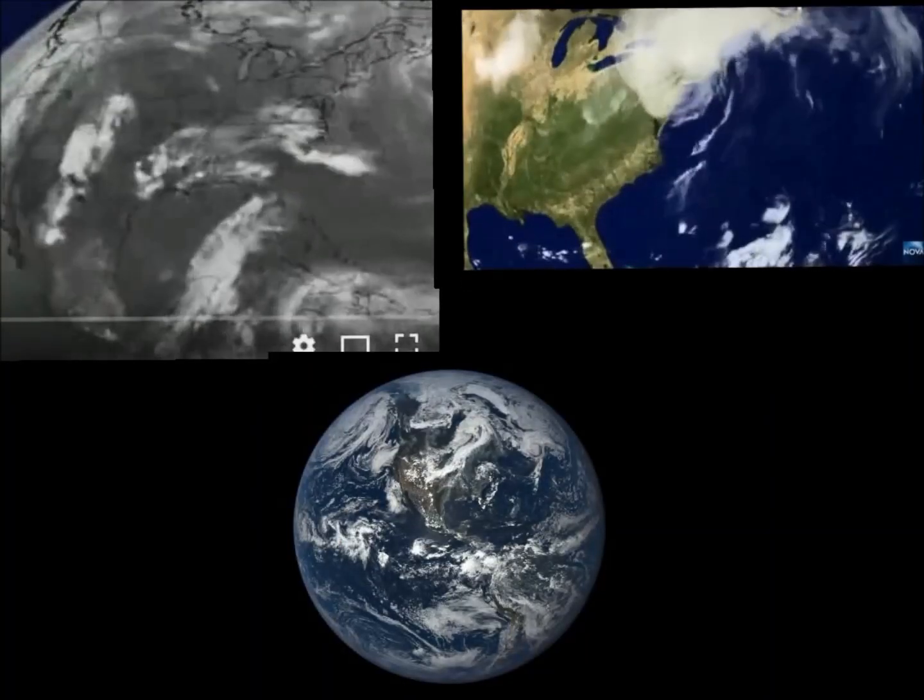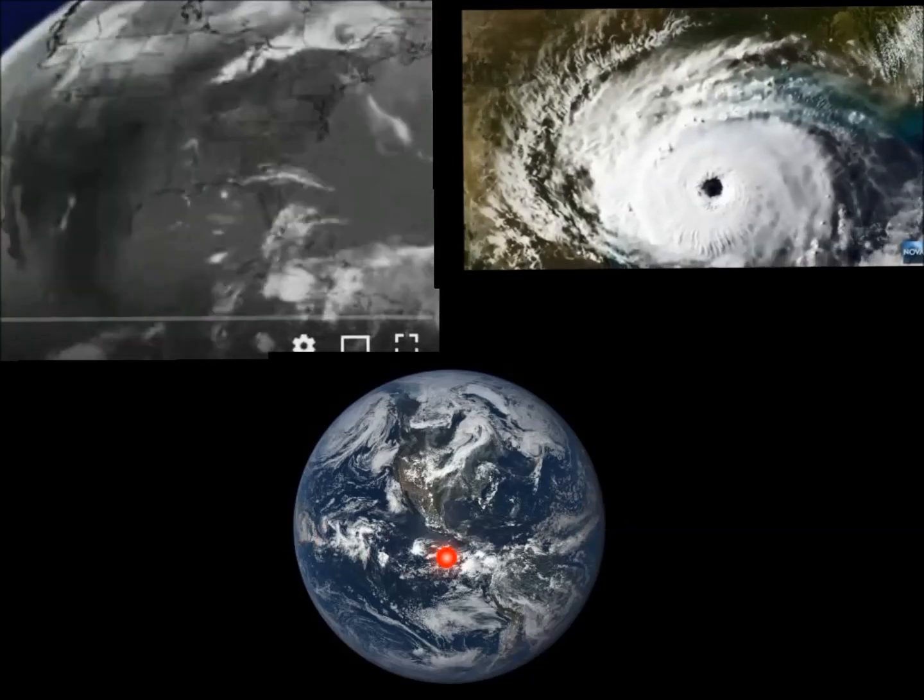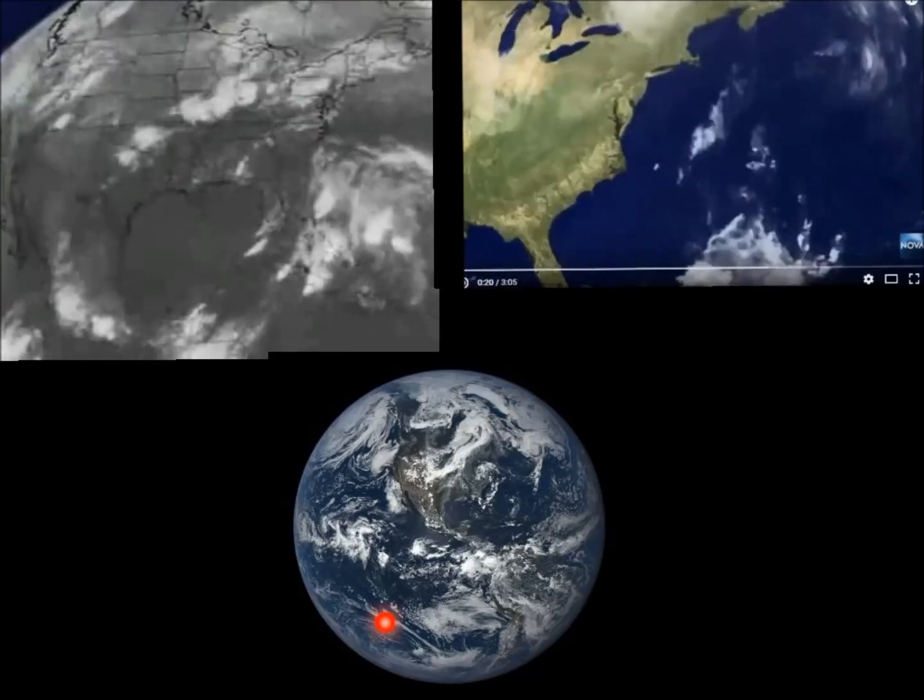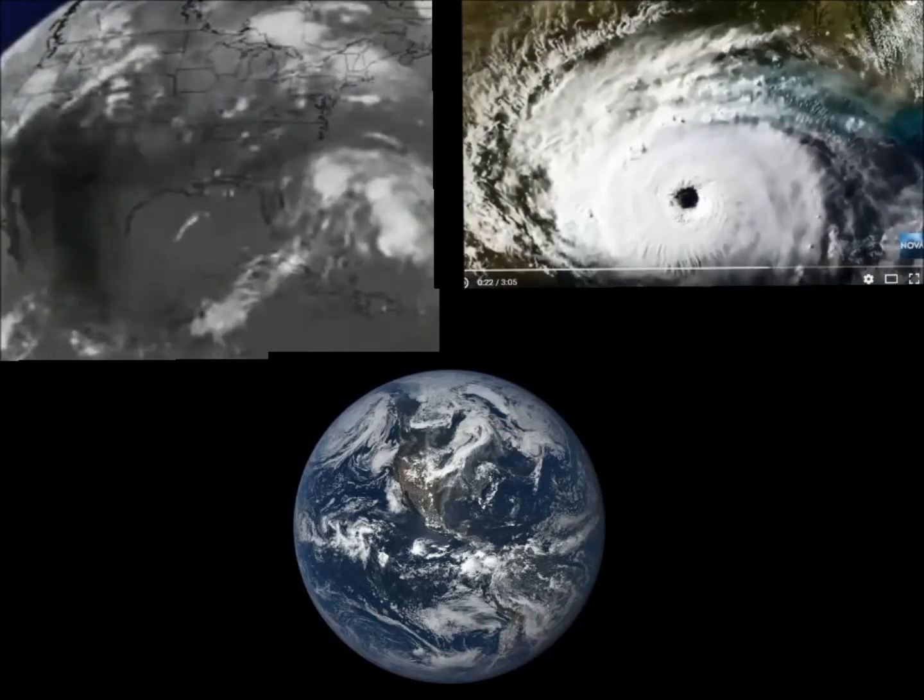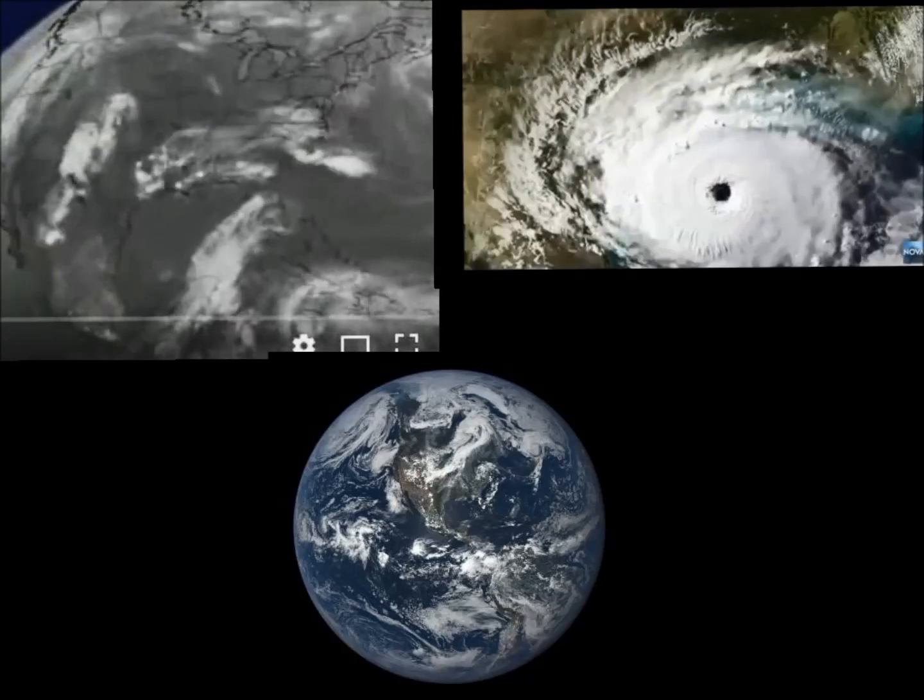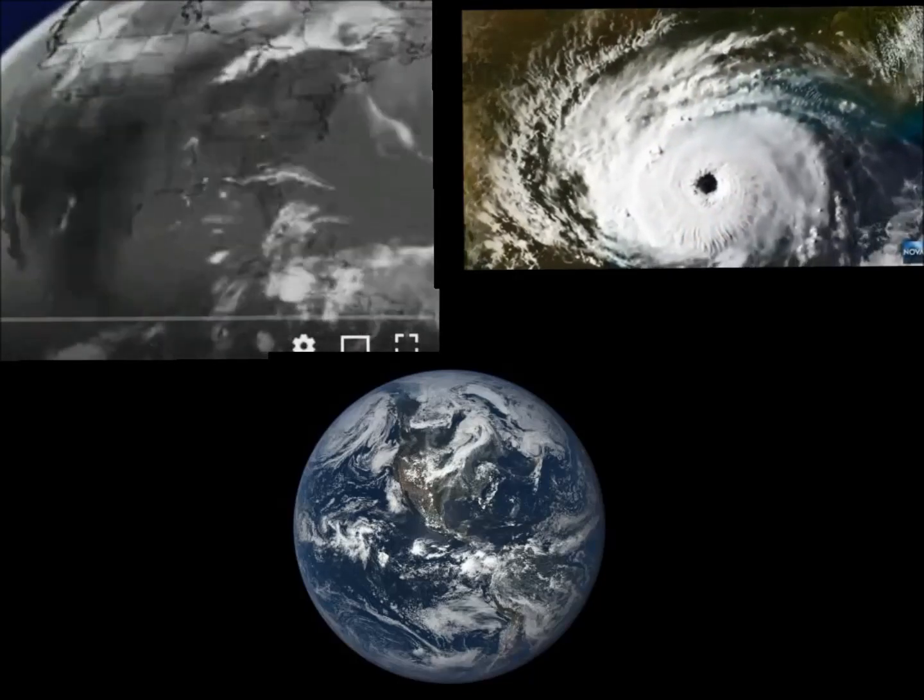So again, that spinning of our planet in that 24-hour time period at a faster rate around the equator and at a slower rate around the poles causes our wind and our clouds to curve around and around that we're seeing in these little video clips.